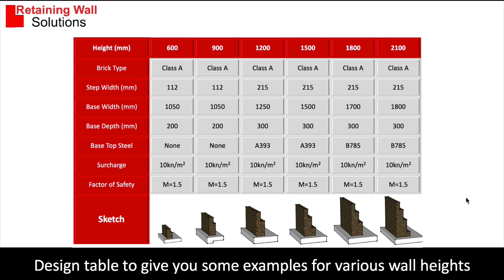This is a design table for masonry walls. You can see the heights of the wall. I've actually allowed for a class A engineering brick, which is quite dense and heavy. This is the step widths — the width of each step. The step width for the smaller walls is 112 millimeters and then the step width here is 215 millimeters.